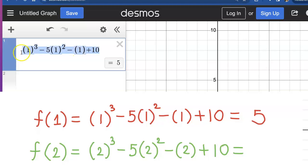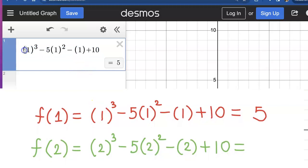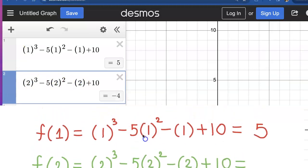Now I'm going to copy this and this time plug in 2 into this function to change all of those to 2, and that came out to be negative 4.